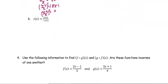For part b, h of x equals x plus 4 divided by negative x plus 3. We start with step number 1: replace the notation h of x with y. We have y equals x plus 4 divided by negative x plus 3. Then in step number 2, we are going to solve for x.